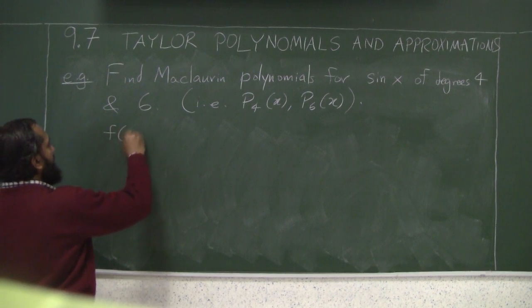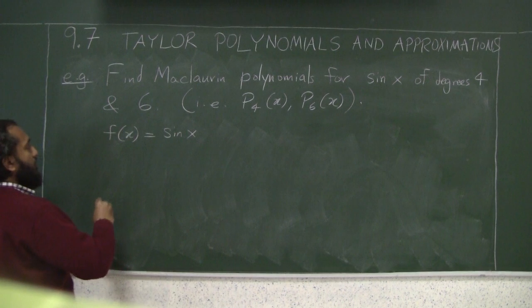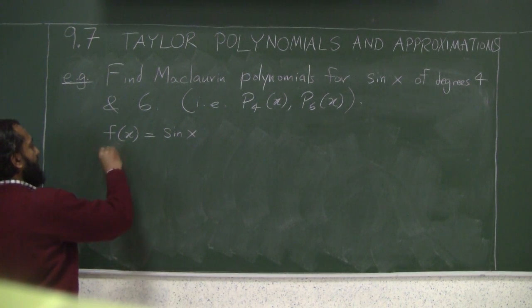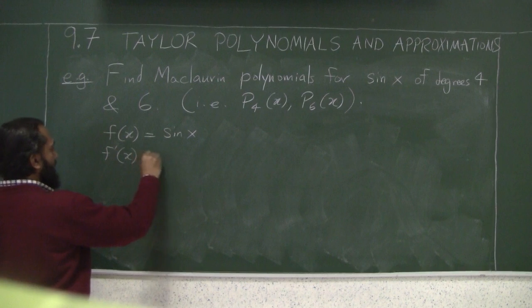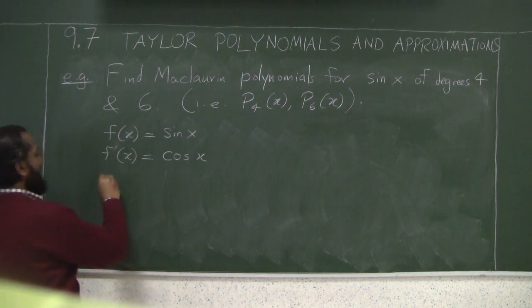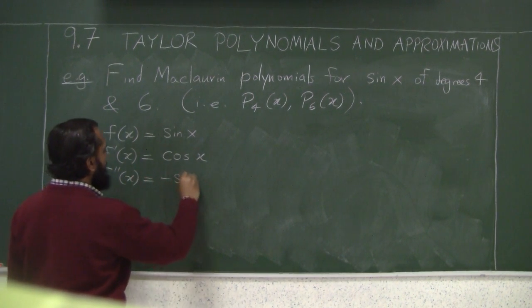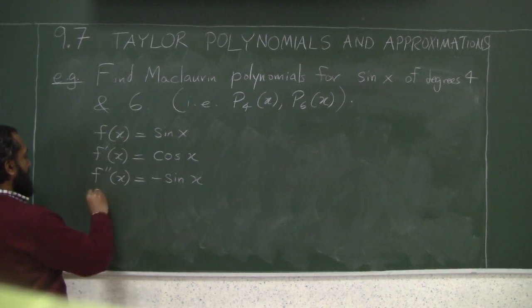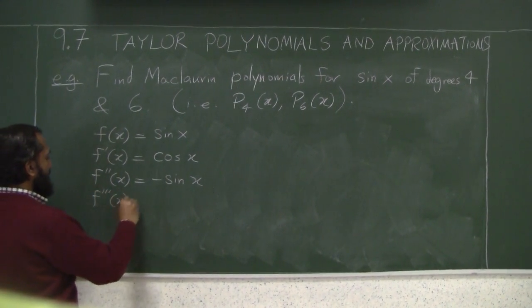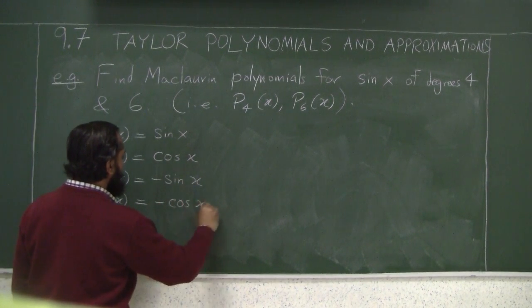f(x) equals sin x. So the first derivative of f is cosine of x. The second derivative is negative sine of x. The third derivative is negative cosine of x.